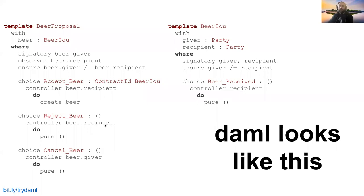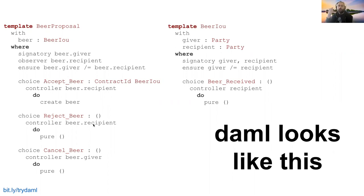For a choice to execute, you basically need the controller to be the one submitting that transaction to the ledger. So for example, the reject beer choice requires the recipient to actually sign a transaction themselves with their authority to go ahead and reject the beer. Signatures here are really managed by the node you're talking to, and there's a permission layer in between - such as OAuth or some other IAM - that is responsible for making sure the recipient has the right token. Parties aren't always people; sometimes parties can be organizations or groups within an organization.